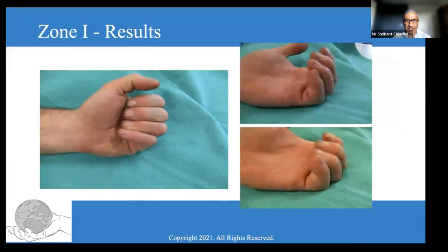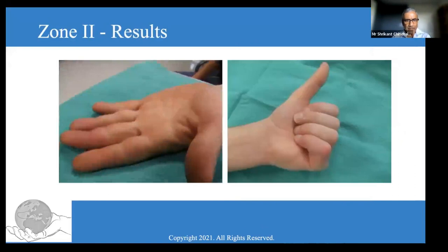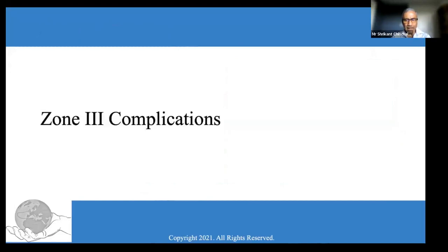We have treated quite a number of these patients. However, we don't yet have a large enough series to publish for Zone 1 injury. Zone 2 cases are doing remarkably well, and this is another case with multiple tendon repairs showing great flexion.